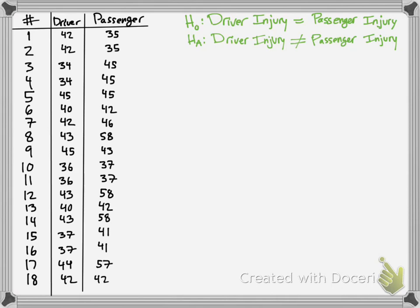Say you have a number of cases where there is a driver and a passenger and they're in a car accident. You want to ask: is there a correlation — or a difference — between the driver's injury and the passenger's? You're testing whether the significance of the injury is related to being the driver or the passenger. The key distinction here is that we just want to know if there's a difference — it's a yes or no answer — but not the magnitude of it. This test will not show you that. But if you want to find out quickly, this is one way to do it.